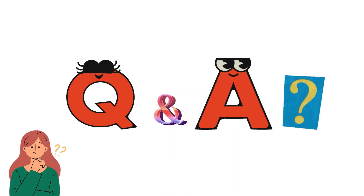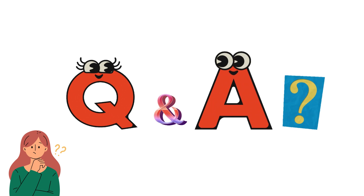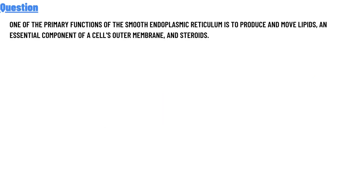Today's question is: one of the primary functions of the smooth endoplasmic reticulum is to produce lipids and essential components of a cell's outer membranes and vesicles. The correct answer to the question is: I agree. So that's the answer to the question.